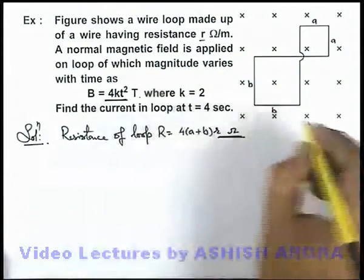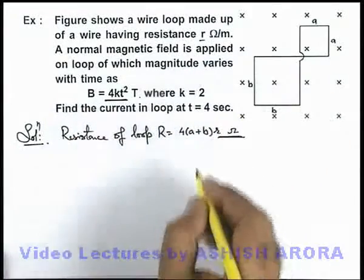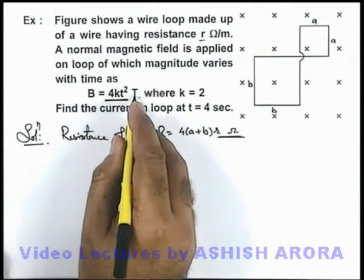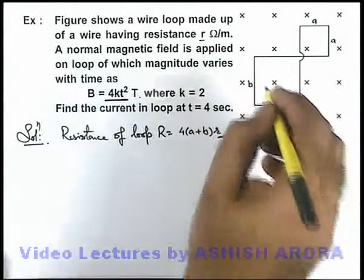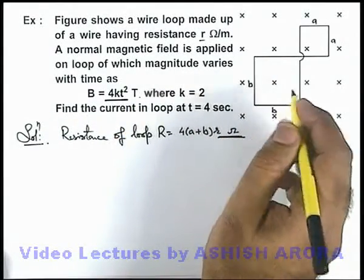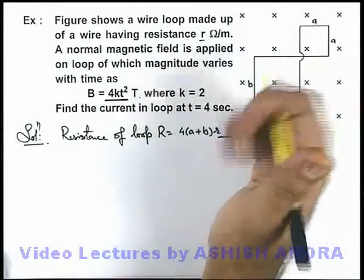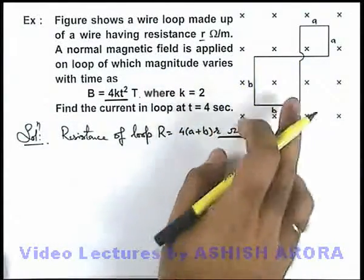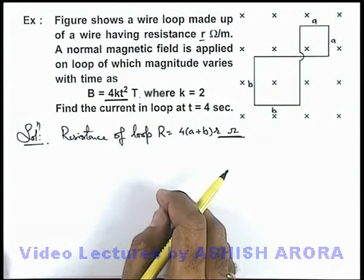Now, due to variation in this magnetic field in inward direction, which is increasing with time, by Lenz's law we can say if inward direction magnetic field is increasing in both of these loops, EMF induced will be anticlockwise in nature so as to oppose the external increment in magnetic induction.